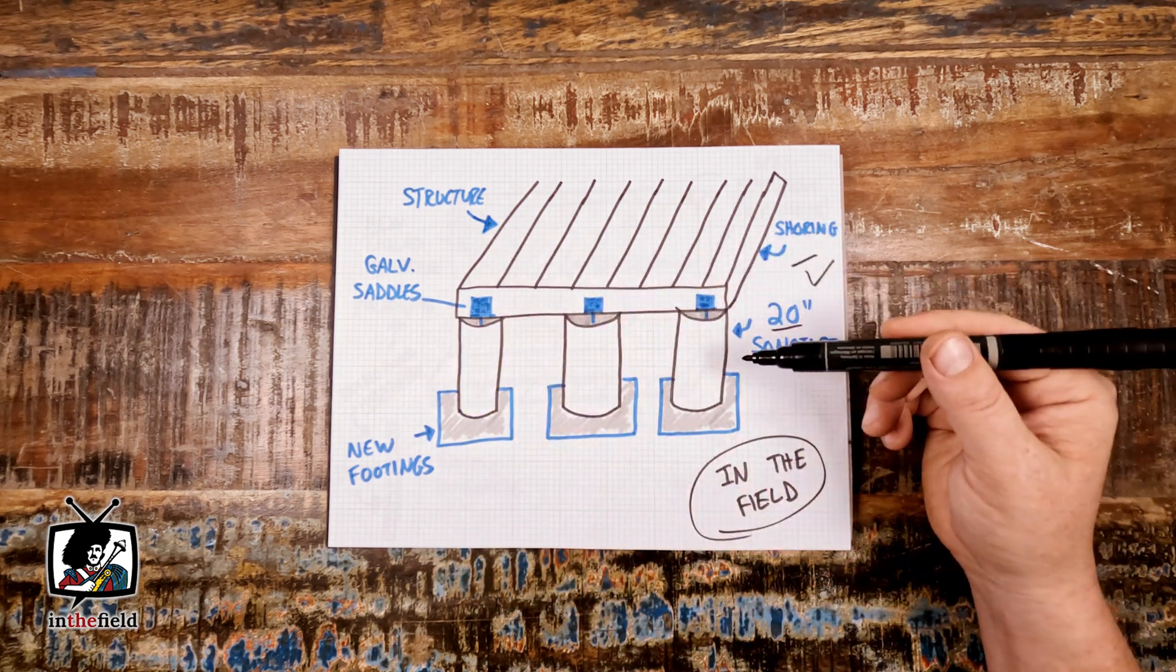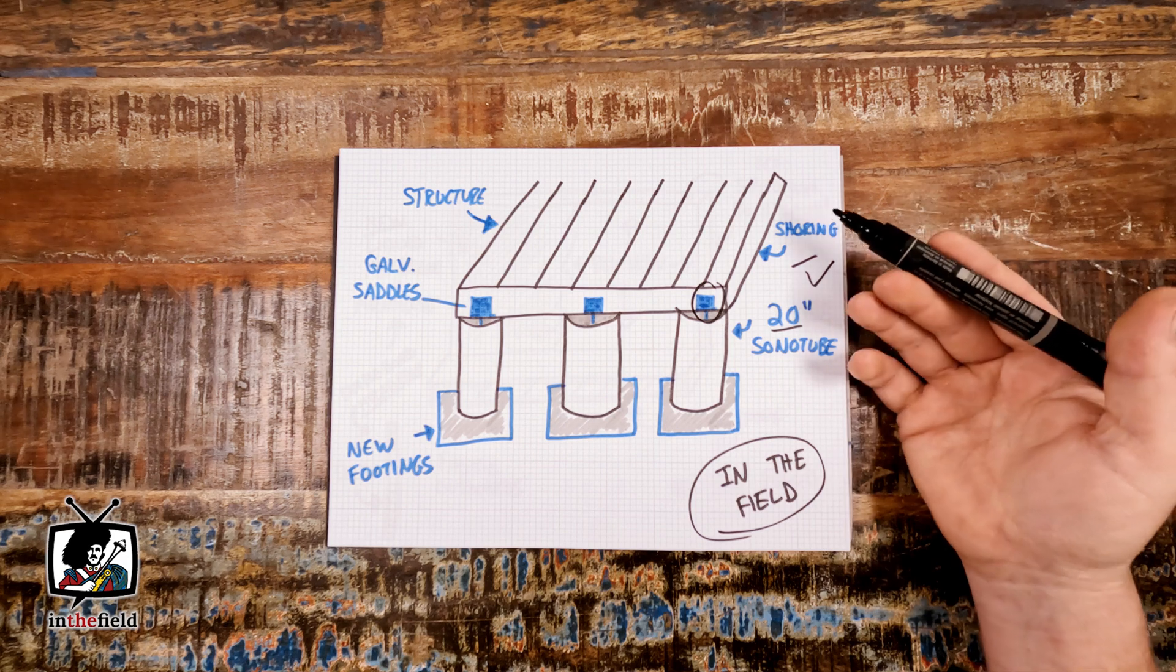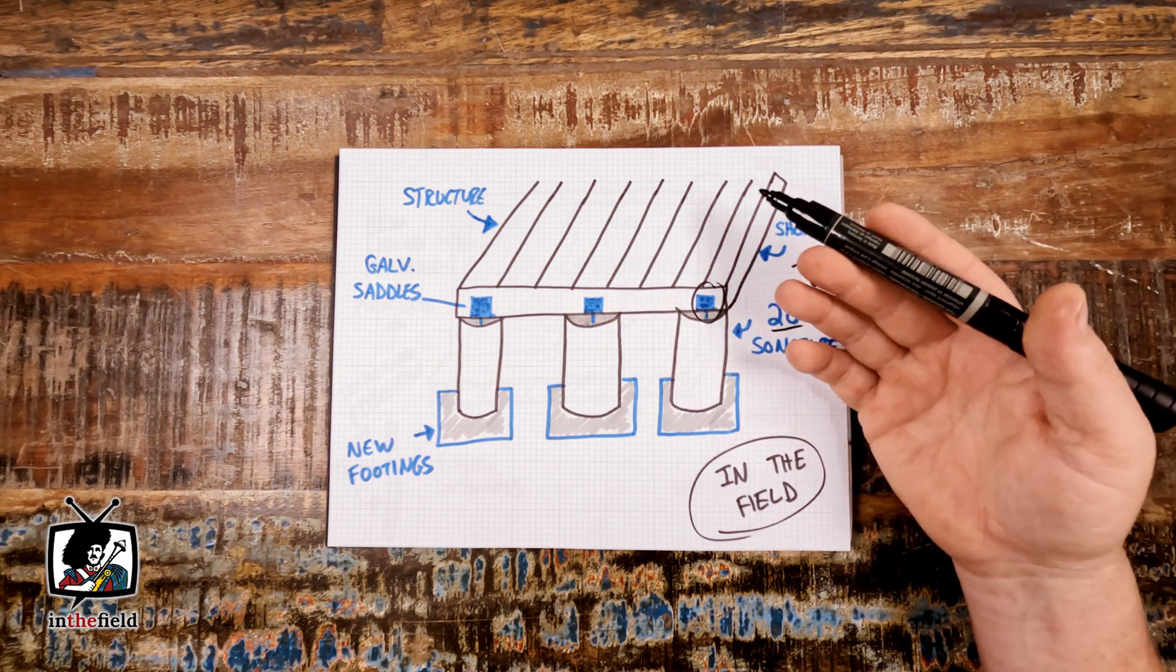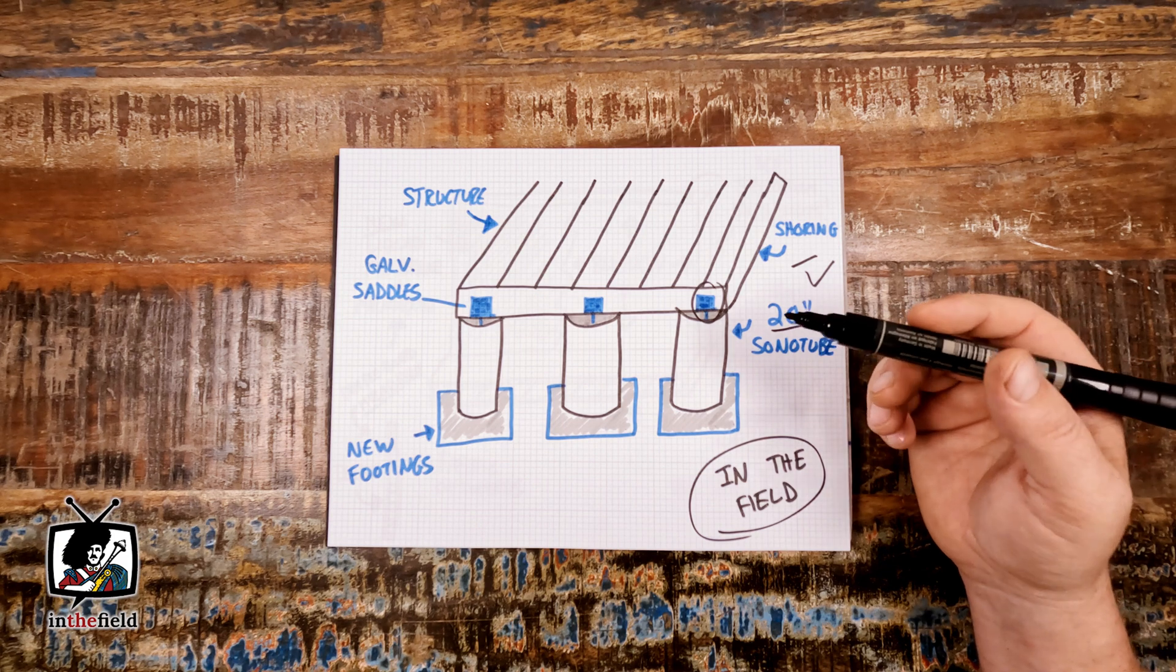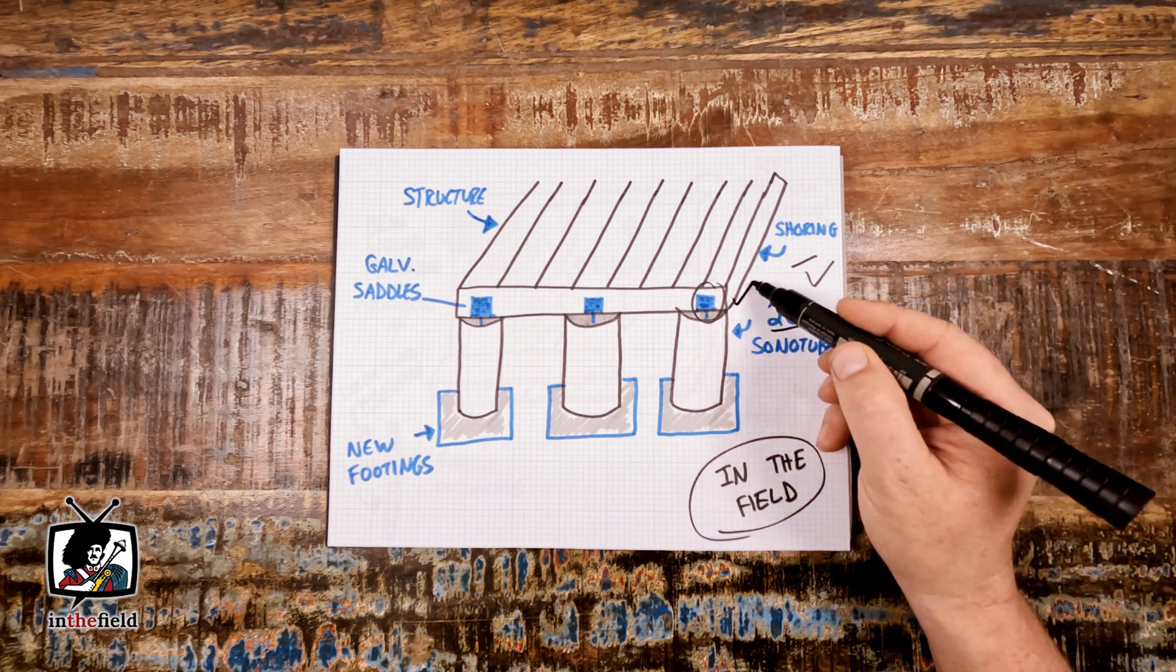Then we installed galvanized saddles and connected them directly to the timber joist supports then to the sonotubes and we fastened those to the underside of the new timber supports.